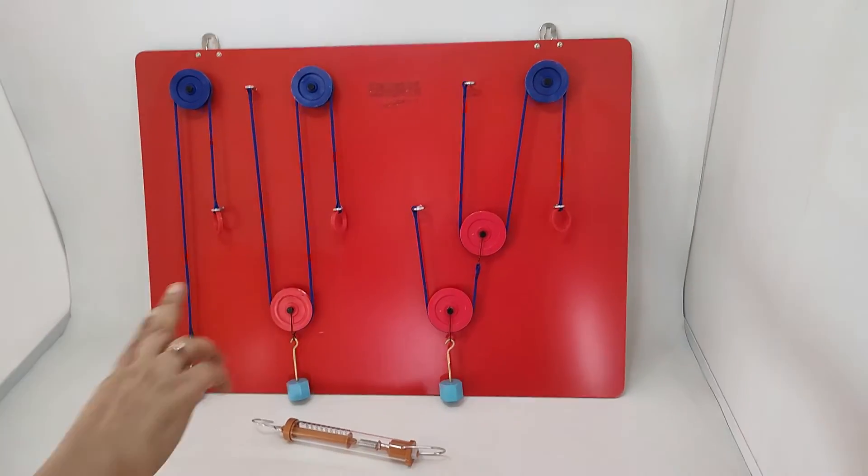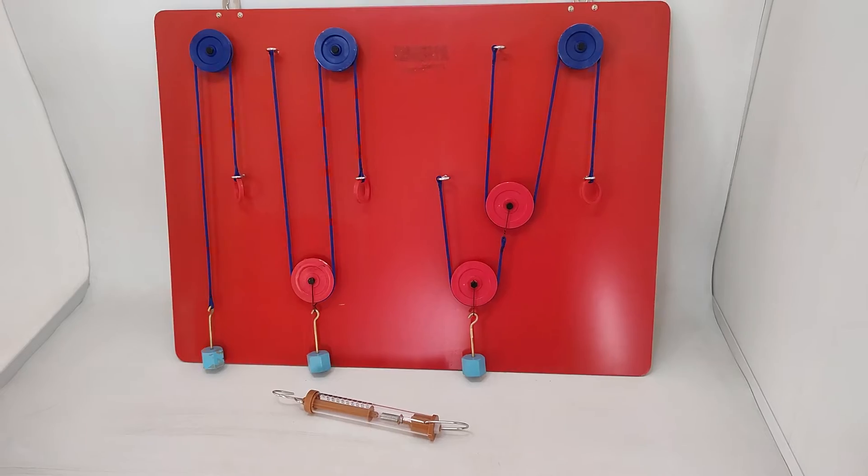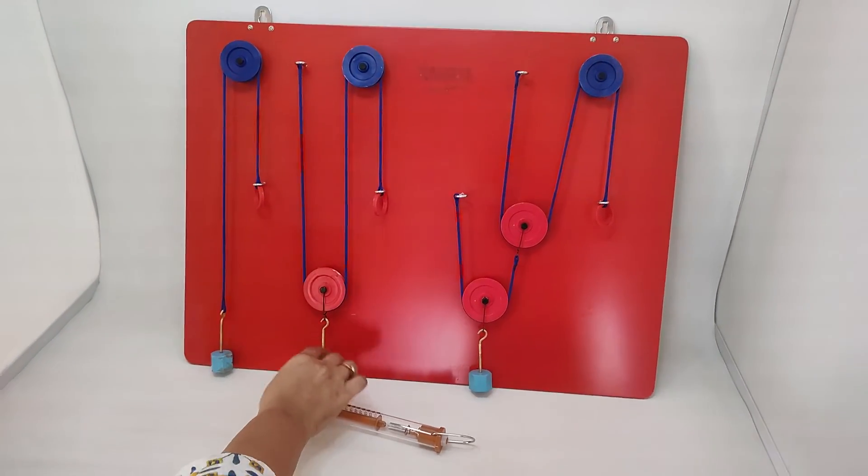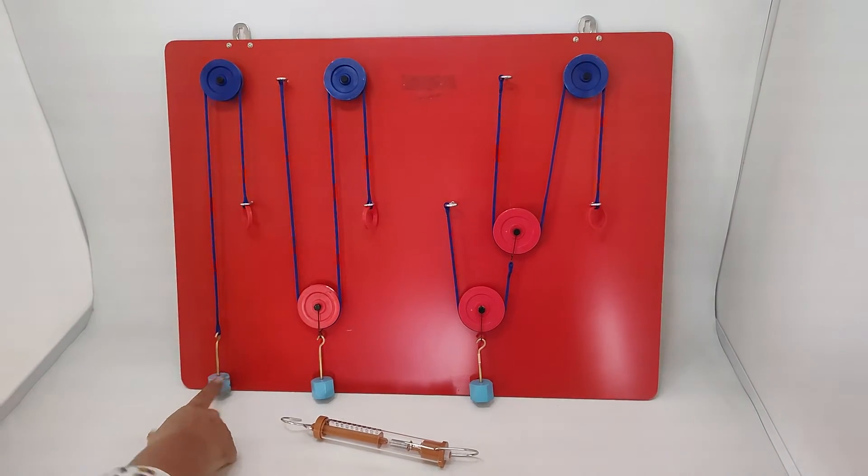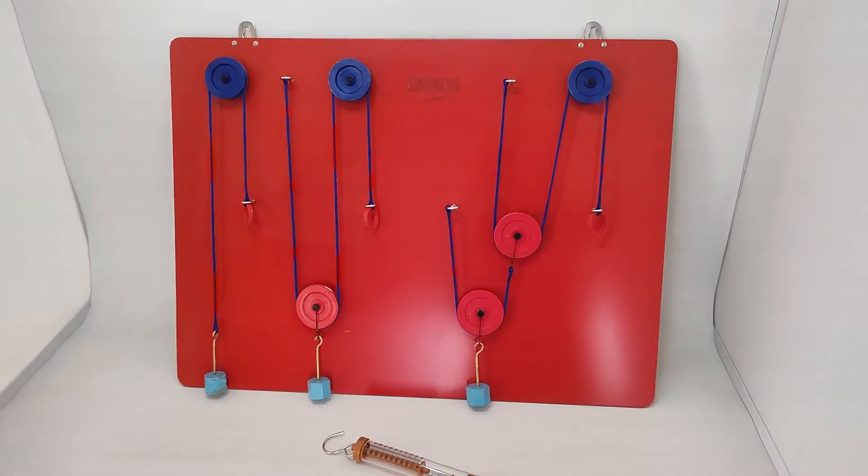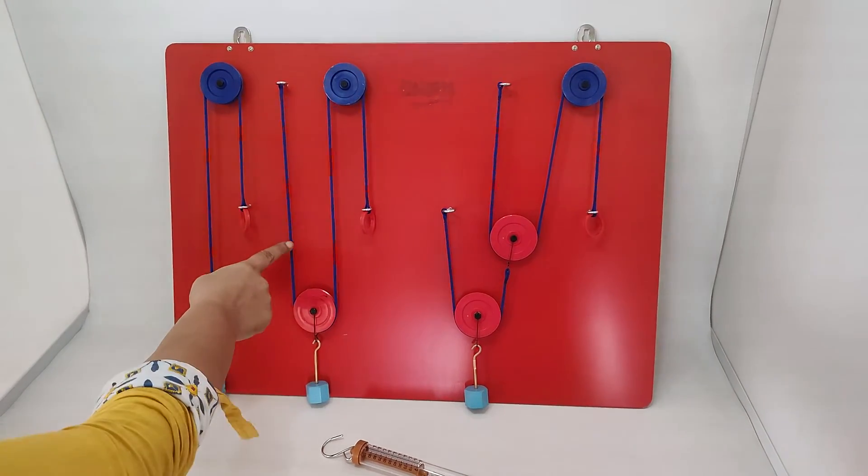Now, what happens as we increase the number of pulleys in the system? In the second scenario, this is the same load as the first, but now the tension is distributed—it's divided into two strings.